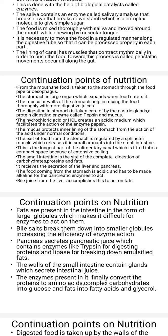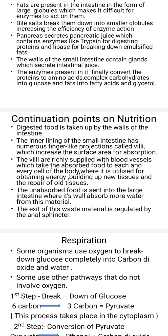The walls of the intestine contain glands that secrete intestinal juice. The enzymes present in it finally convert proteins into amino acids, complex carbohydrates into glucose, and fats into fatty acids and glycerol. Digested food is taken up by the walls of the intestine. The inner lining of the small intestine has numerous finger-like projections called villi which increase surface area for absorption. The villi are richly supplied with blood vessels which take the absorbed food to each and every cell of the body, where it is used for obtaining energy, building new tissues, and repair of old tissues. Unabsorbed food is sent into the large intestine where its walls absorb more water, and the waste material exits through the anus.